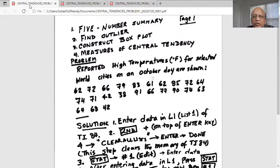Good day, today we are going to discuss a problem on five-number summary. This is your stat tutor. So our goal is to find a five-number summary, find outliers, construct a box plot, and then determine the measures of central tendency. The problem states: reported high temperatures in degrees Fahrenheit for selected world cities on an October day as shown.